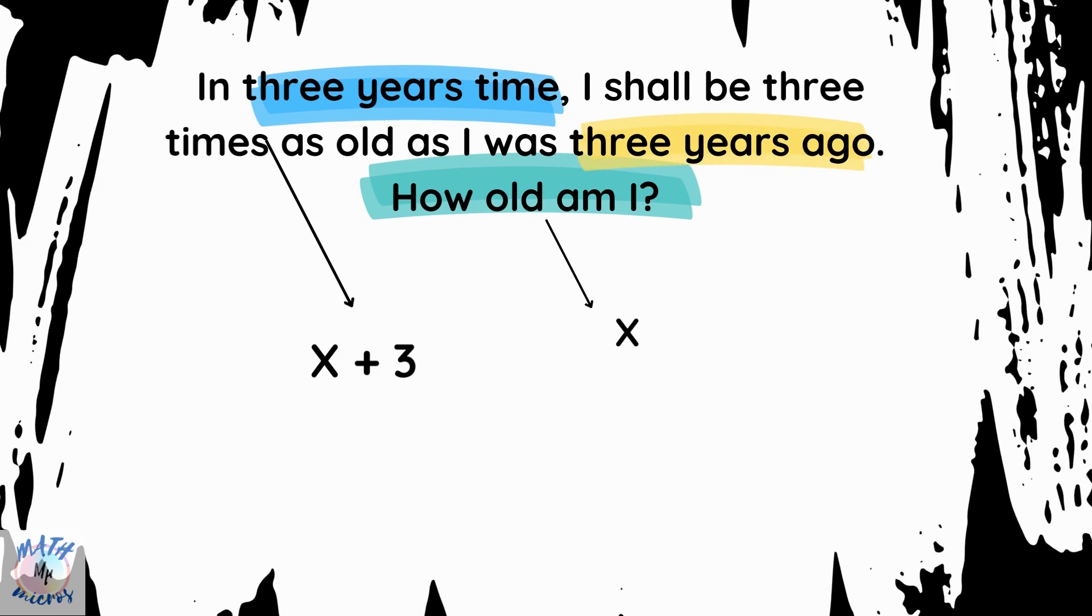Now, another keyword, which is three years ago. So, that's the past. So, it will be x minus 3.